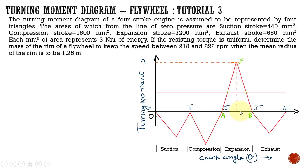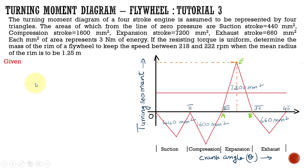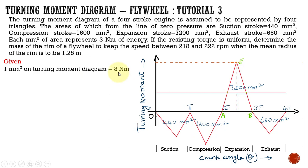The suction stroke area is 440 mm², compression stroke is 1600 mm², expansion stroke is 7200 mm², and exhaust stroke is 660 mm². The other data provided are: the scale of the turning moment diagram — each 1 mm² represents 3 Nm — and the radius of gyration is given in the form of mean radius, so we can take the radius of gyration as the mean radius.